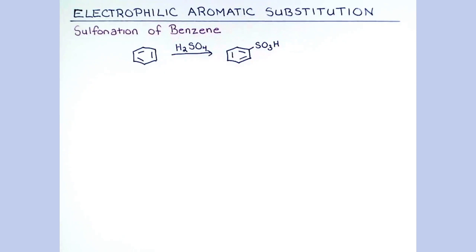The EAS reaction can also be used to introduce a sulfonic acid group onto an aromatic ring. In this lesson, we're going to look at two sets of conditions that can cause this reaction to occur.